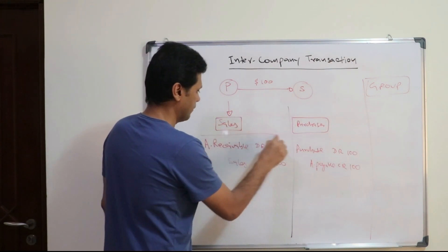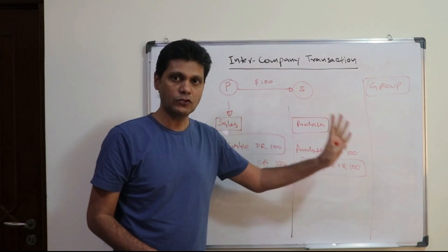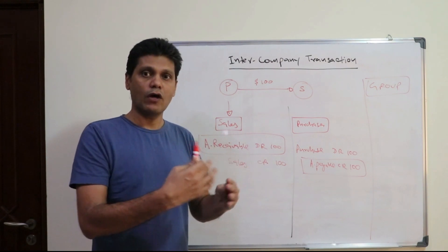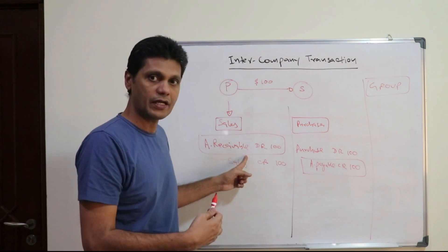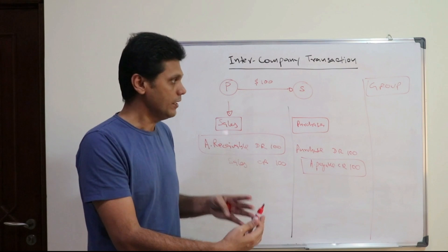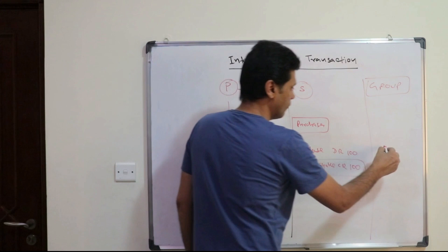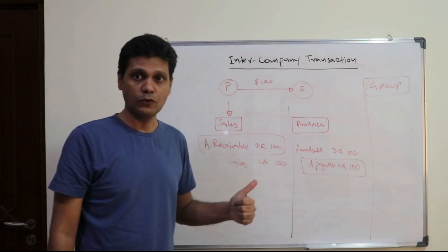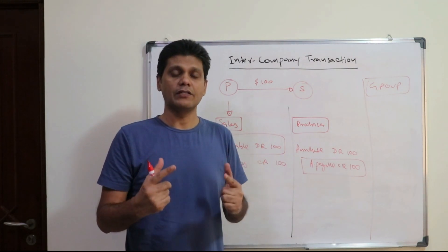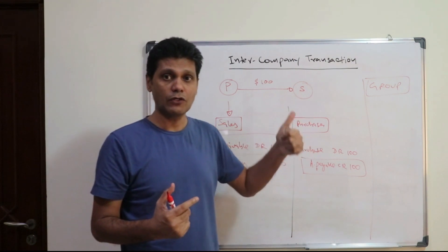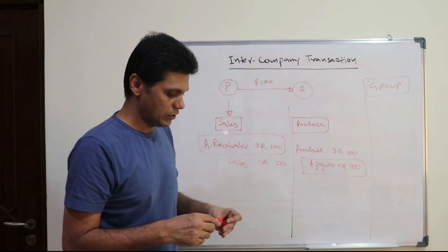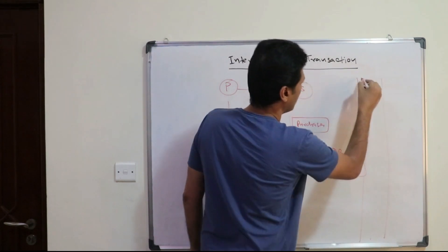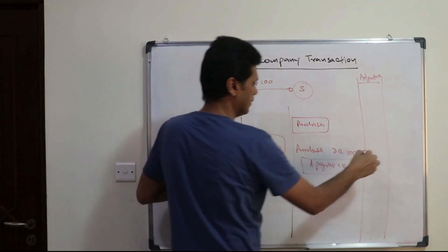So these particular transactions — we are discussing about the consolidated financial position, how to prepare a consolidated financial position. When you prepare it, you need to follow the line-by-line method. When you consolidate, all the current assets and current liabilities will have to be added together. Since these are intercompany transactions, they will not appear in the group financial position and have to be eliminated. When you take the consolidation schedule, there will be an adjustment column, and in that adjustment column you need to eliminate this particular transaction.